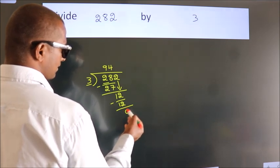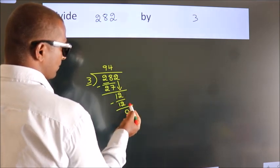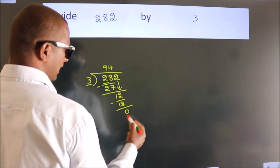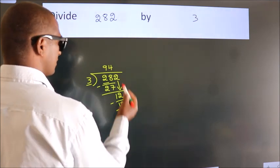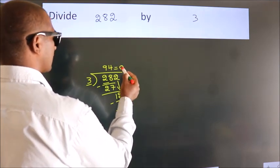After this, no more numbers to bring down and we got remainder 0. So this is our quotient.